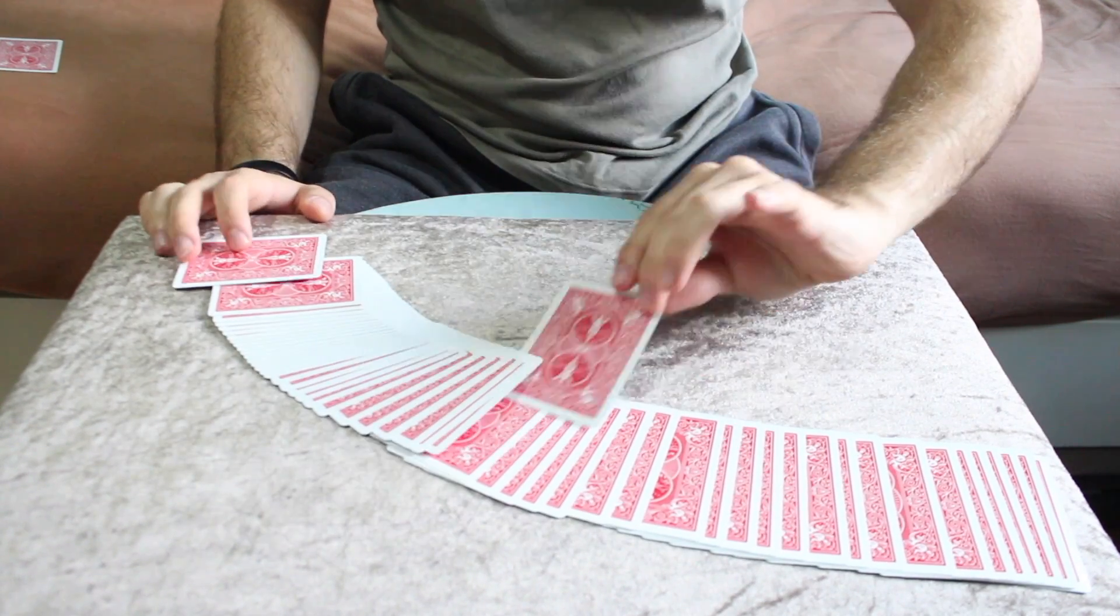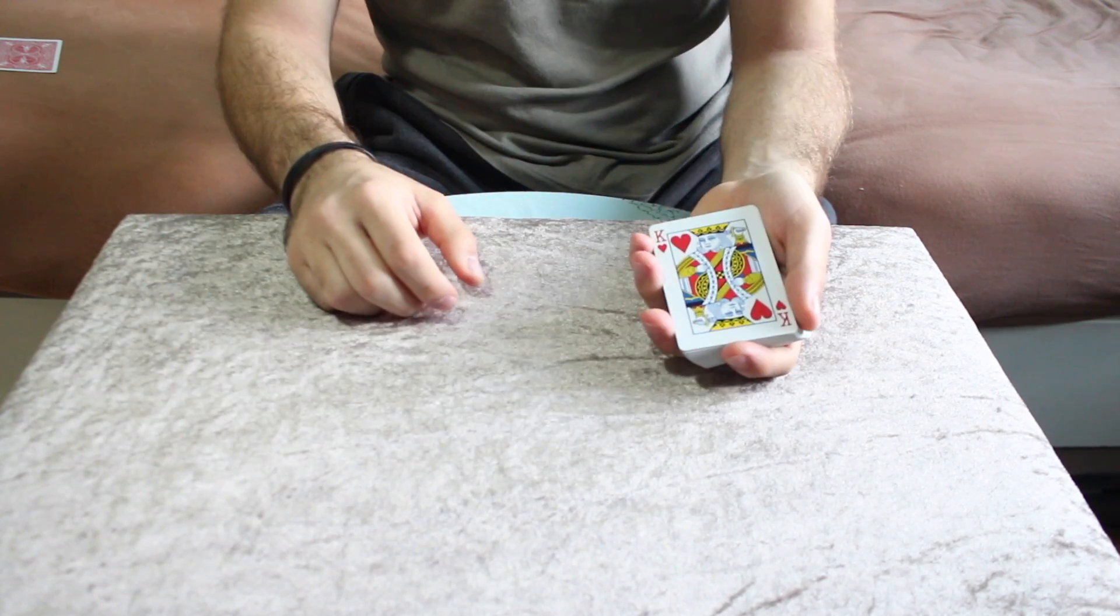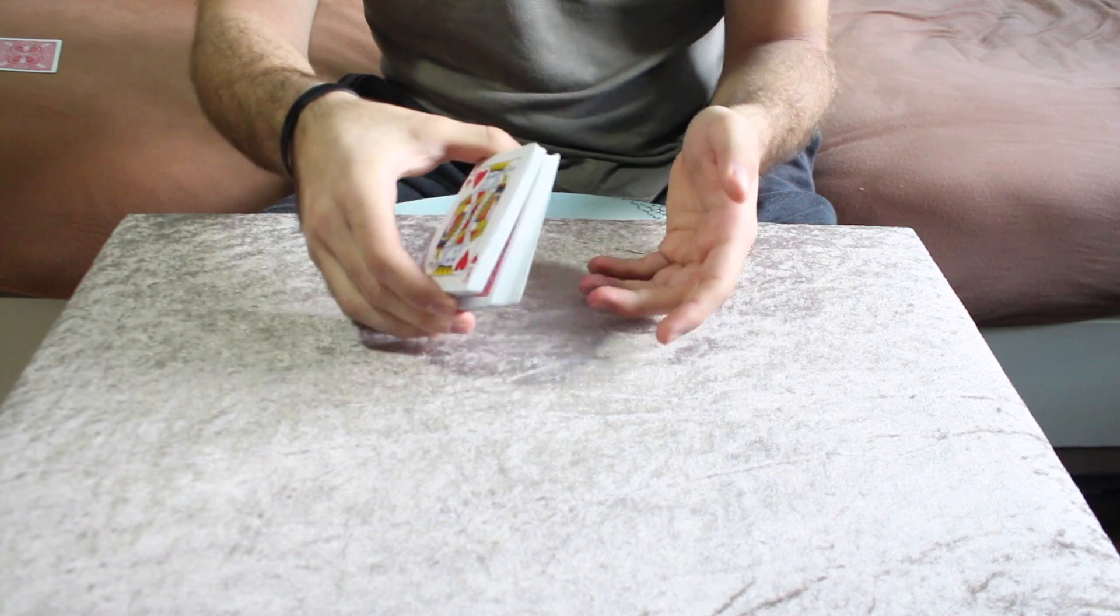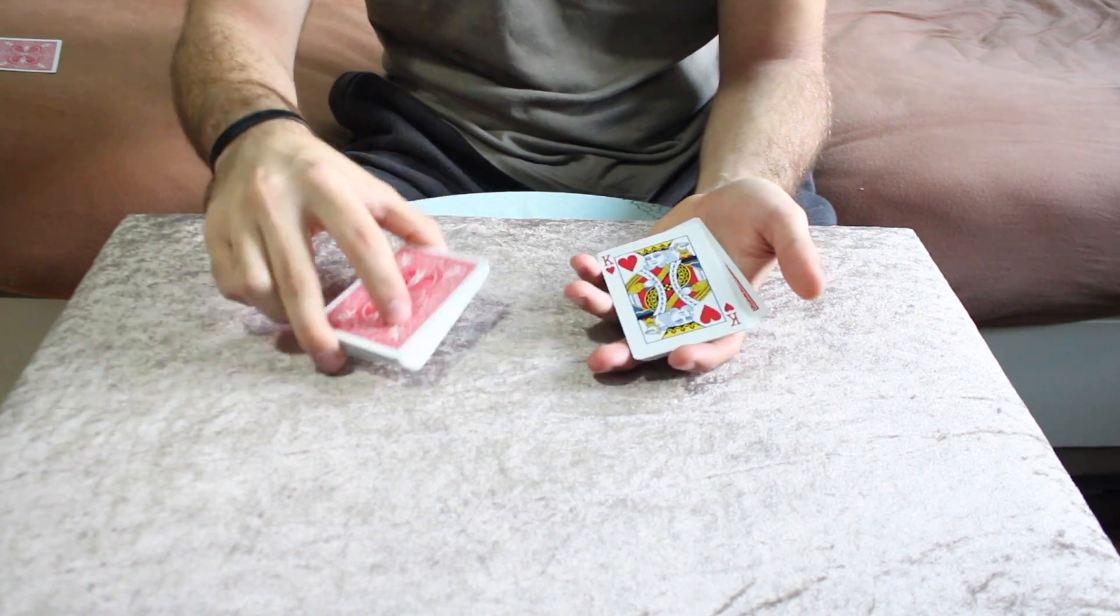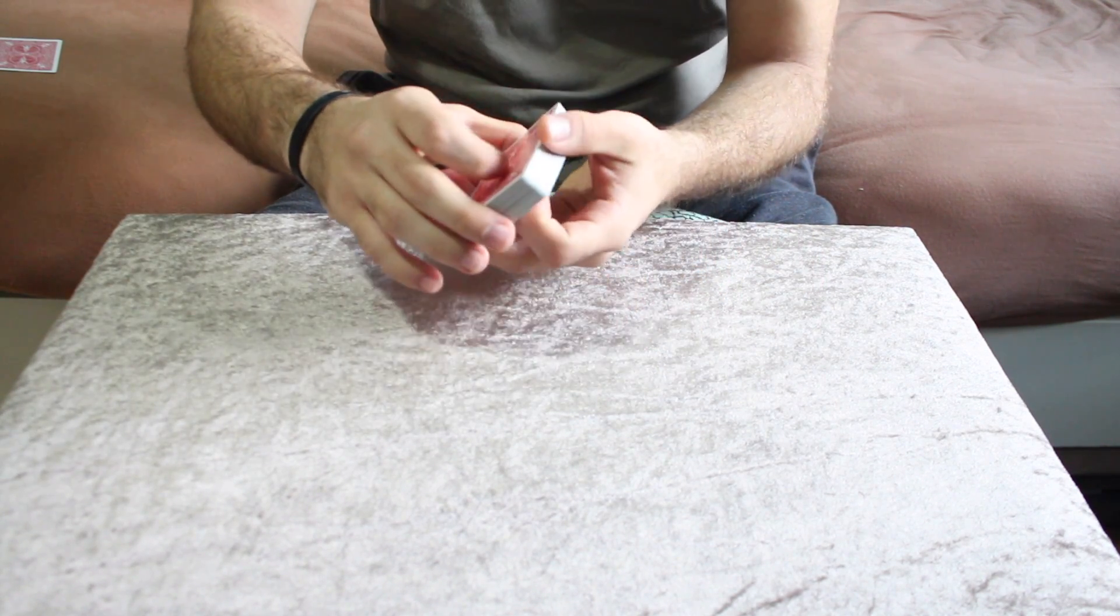Just have any card selected, the king of hearts, and place it facing up on top of the pack. Now, once the card has been signed and remembered, you swing cut the pack. Here I have now my breather crimp card. I turn the king of hearts around and drop all cards on top of it.